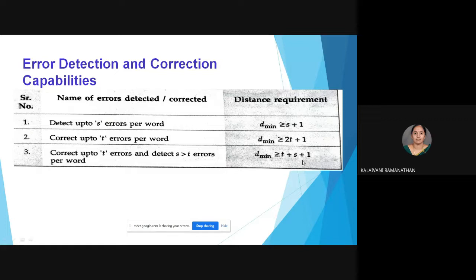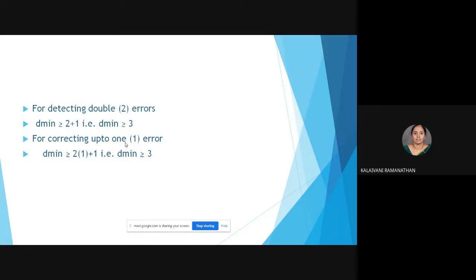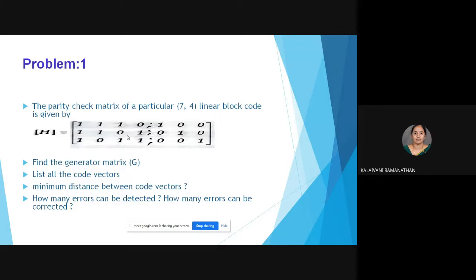By satisfying the d_min condition, the code can detect or correct errors. For detecting double errors, d_min must be ≥ 3, and for correcting one error it must also be ≥ 3. Now let us see a problem: the parity check matrix of a particular (7, 4) linear block code is given by H. Find the generator matrix G, list all the code vectors, find the minimum distance between the code vectors, and determine how many errors can be detected and corrected.